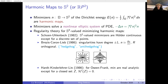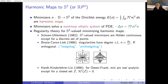Around the same time, Hardt-Kinderlehrer-Lin proved that for the full Oseen-Frank energy with all terms — curl, divergence, splay — minimizers are real analytic except for a closed set of Hausdorff dimension zero. So minimizers cannot have line defects. This is very important: minimizers satisfy this property, and therefore cannot have line defects in the finite-energy setting.